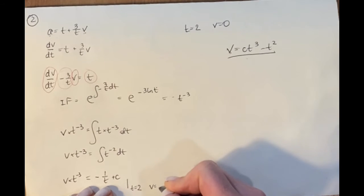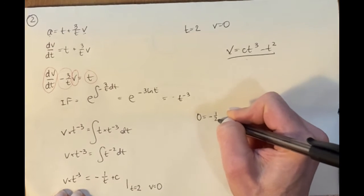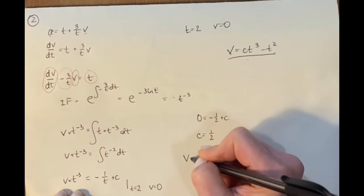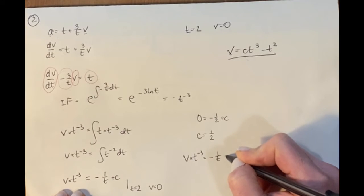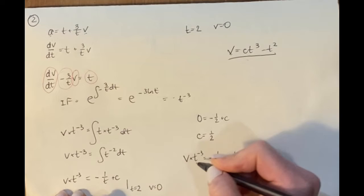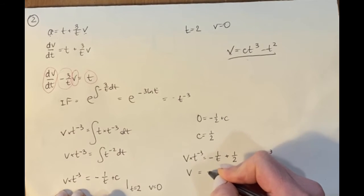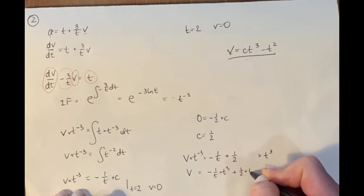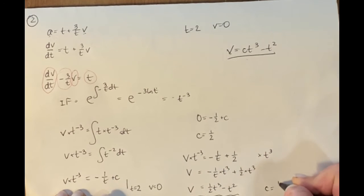At t = 2, velocity = 0. Substituting: 0 × 2⁻³ = −1/2 + c, so c = 1/2. Therefore v × t⁻³ = −1/t + 1/2. Multiplying through by t³: v = −t² + ½t³, which is ½t³ − t². So c = 1/2.